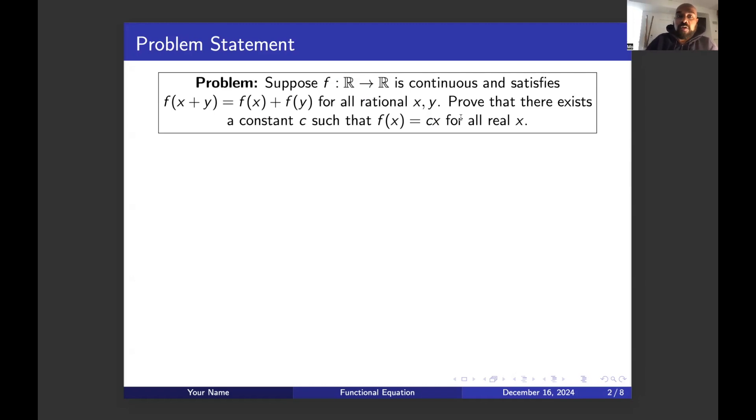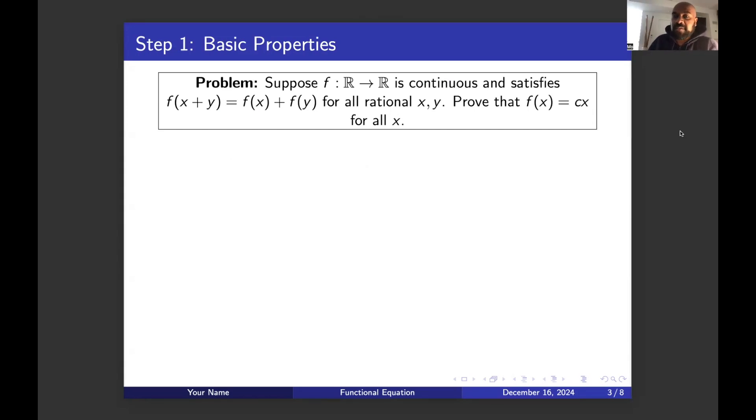So in other words, all the functions that satisfy this for rational values of x that are also continuous are actually themselves linear functions with no constant term. Alright, so let's play around and see why this might be the case.